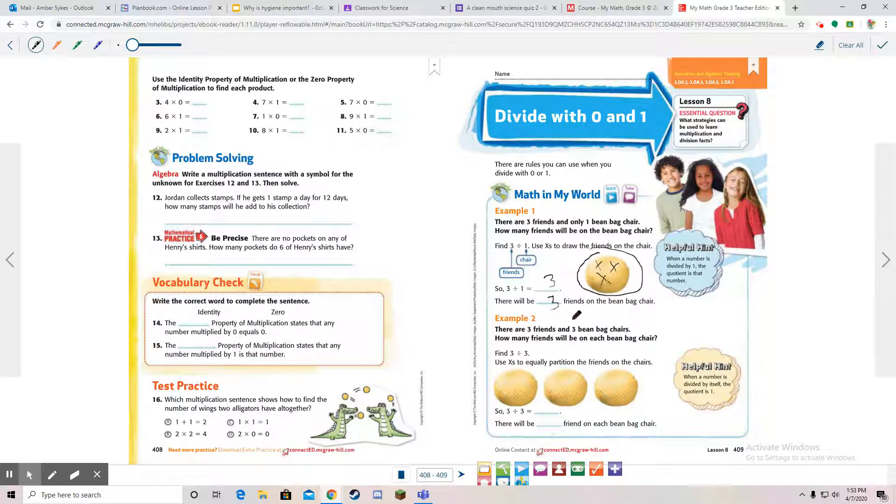There are three friends and three beanbag chairs. How many friends would be on each beanbag chair? Use the x's to equally distribute the friends on the chairs. We have one, two, three chairs and three friends. One here, one here, one here. We equally divided them. Three divided by three is one. There will be one friend on each beanbag chair.